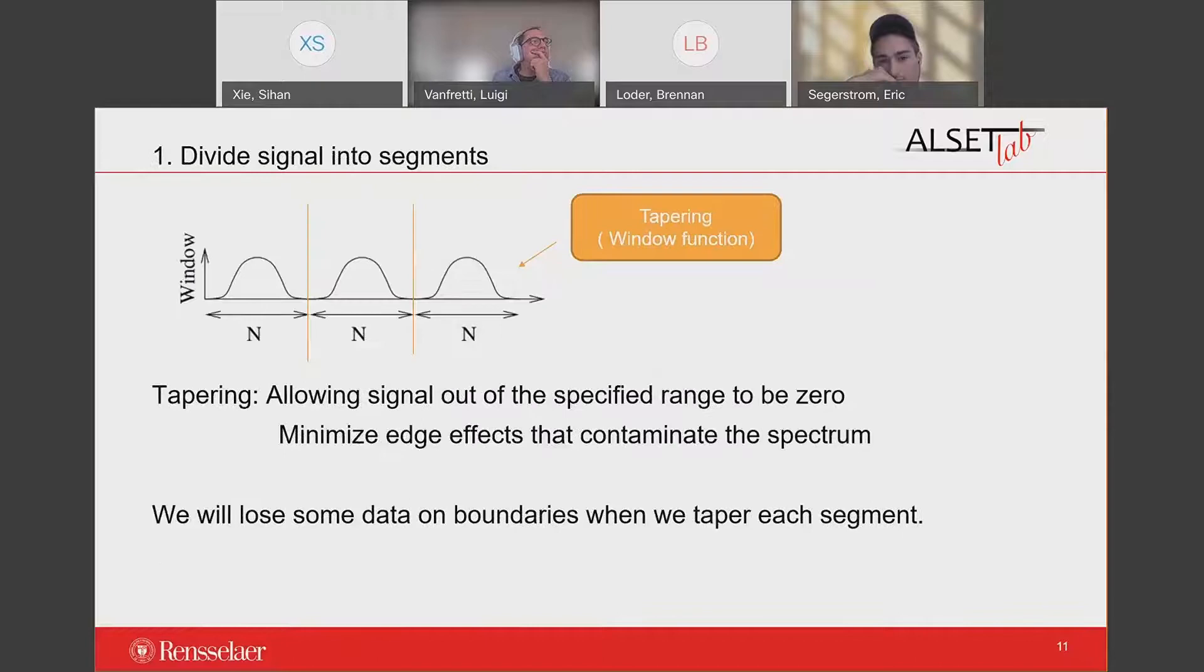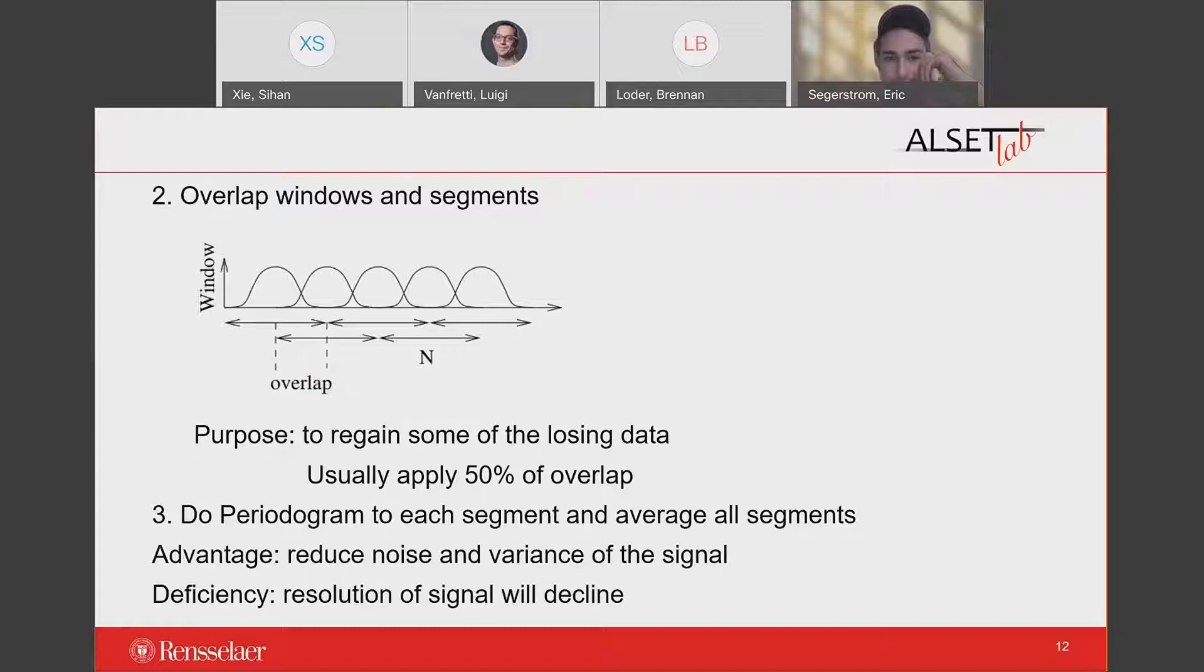The first step is to divide signals into segments and taper each of them. Tapering is the method that allows signals out of the specified range to be zero. This is crucial before applying the Fourier transform because Fourier transform will consume a lot of energy on edges of the signal, and tapering is able to minimize edge effects that contaminate the power spectrum. But it will also create a problem because we will lose some data on boundaries. Therefore, we allow these segments to overlap. The purpose is to regain some of the losing data, and usually we will apply 50% of overlap to each segment.